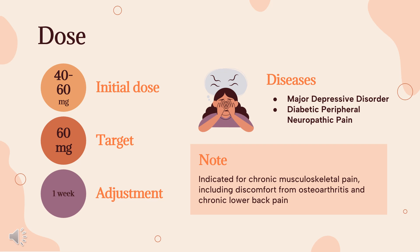For diabetic peripheral neuropathic pain, there is no evidence that doses greater than 60 mg per day confer additional benefit. Consider a lower starting dosage and gradually increased dose for patients with renal impairment.